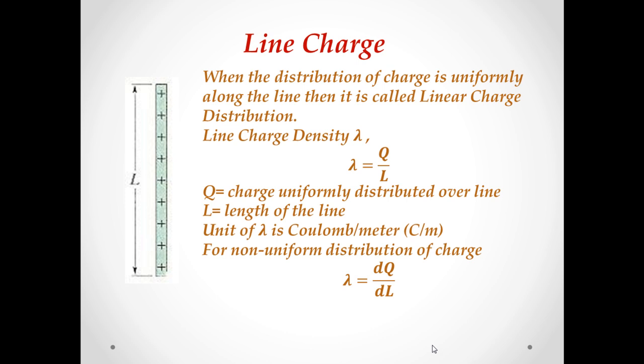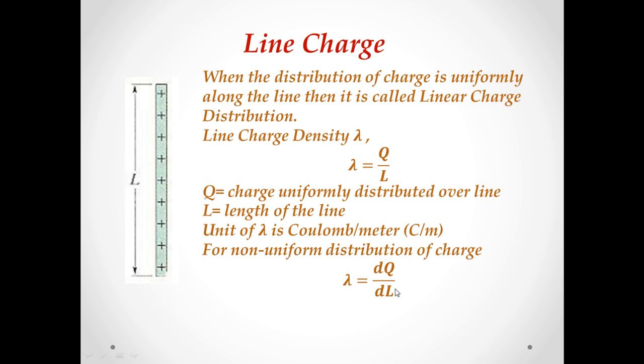If a charge Q is uniformly distributed along a line of length L, the line charge density lambda is defined as lambda equals Q by L, and unit of this lambda is coulomb per meter. For charge distributed non-uniformly over a line, linear charge density would be lambda equals dq upon dl, where this dq is the amount of charge in a small length element dl.